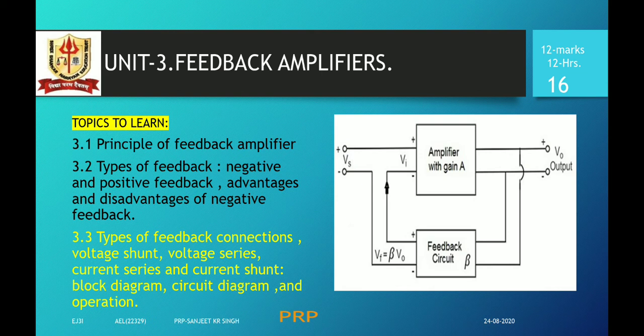Topics to be covered in this presentation are the types of feedback amplifiers, or the types of feedback connections: voltage shunt, voltage series, current series, and current shunt — with respect to block diagram, circuit diagram, and operation. In the previous presentation we have seen the principle of the feedback amplifier and the types of feedback.